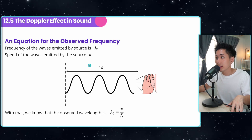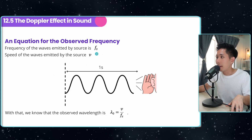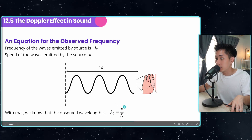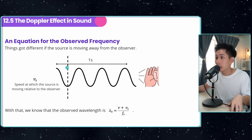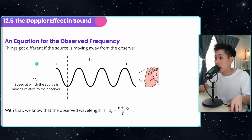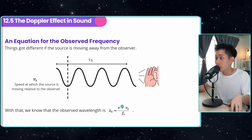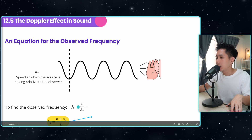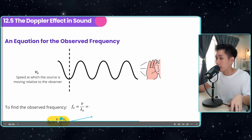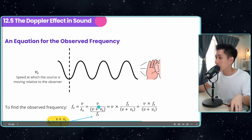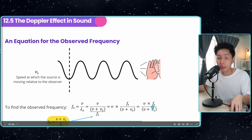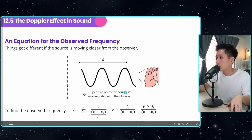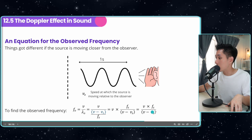Let me break down the Doppler equation. Fs is the frequency emitted by the source, v is the speed of the wave, and λ₀ is the observed wavelength. Using v = fλ, we can get the wavelength. When the source is moving away from the observer, the observed wavelength becomes (v + vs)/Fs, where vs is the speed of the source. The observed frequency is then f₀ = v/λ₀ = vFs/(v + vs). If the source is moving closer, we subtract vs instead, giving f₀ = vFs/(v − vs).